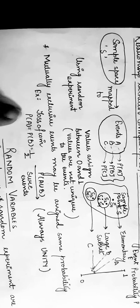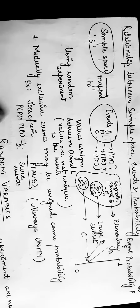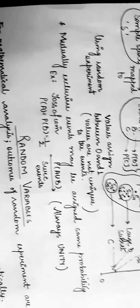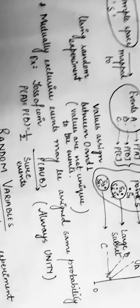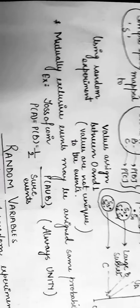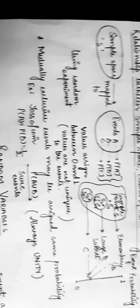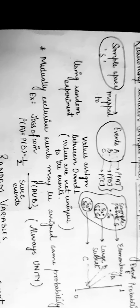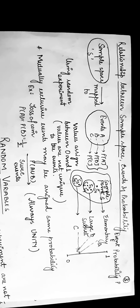Similarly, mutually exclusive events may be assigned the same probability. For example, P(A) = P(B) = 1/2, so P(A ∪ B), the sure event, will always equal 1. This was all about the axioms of probability. In the next lecture, we will discuss random variables. Thank you.